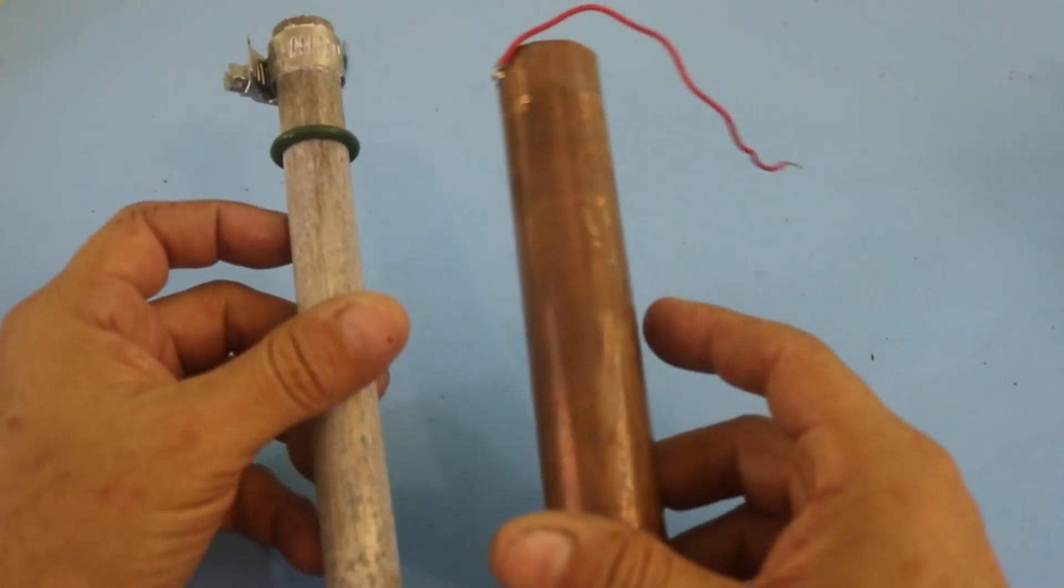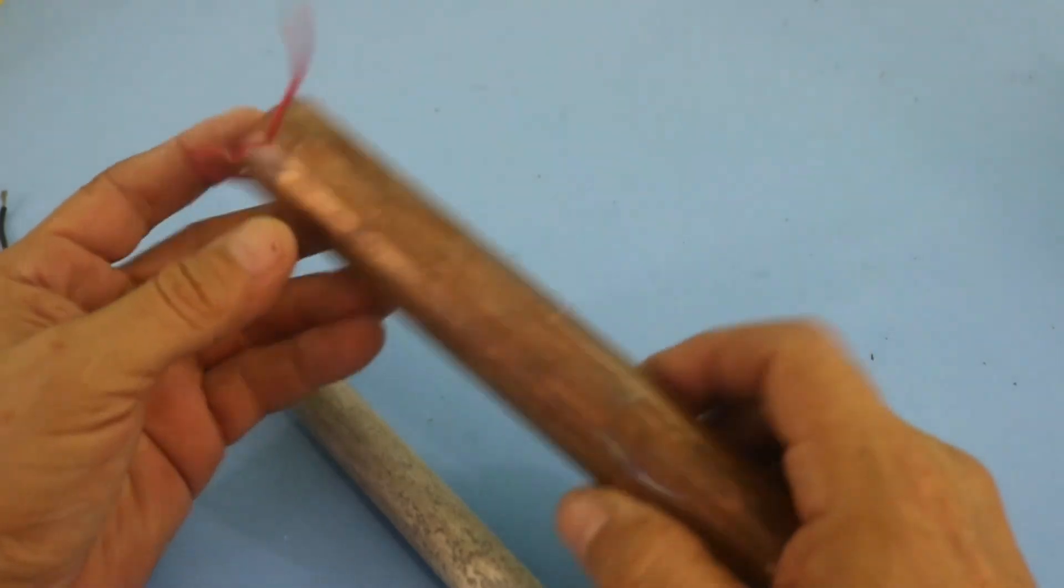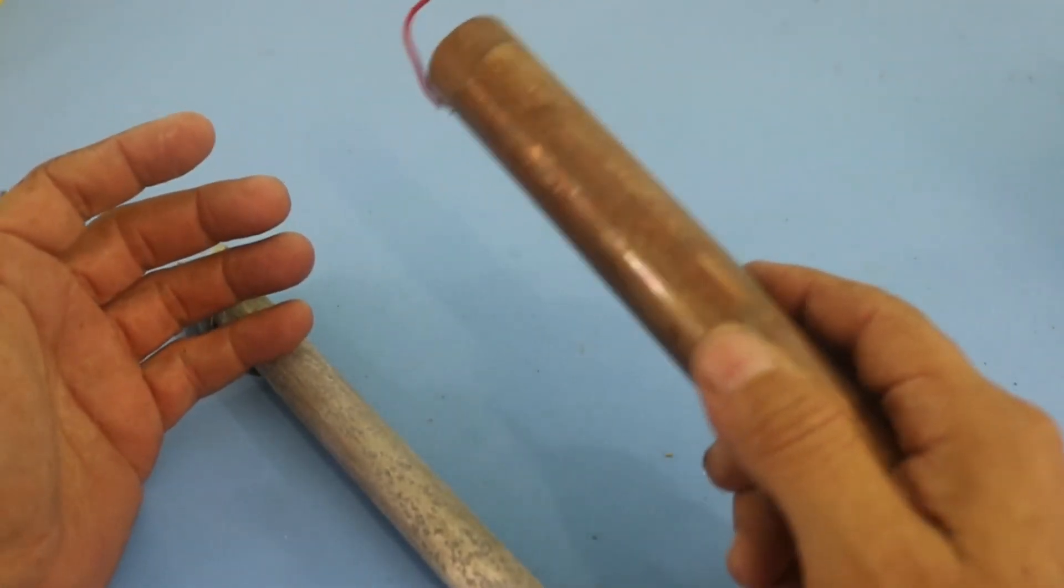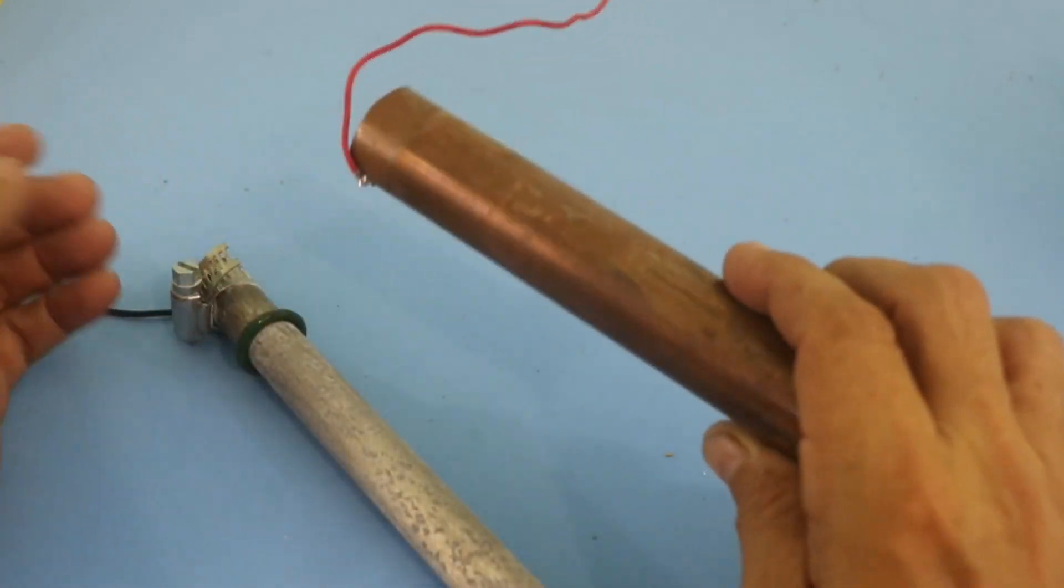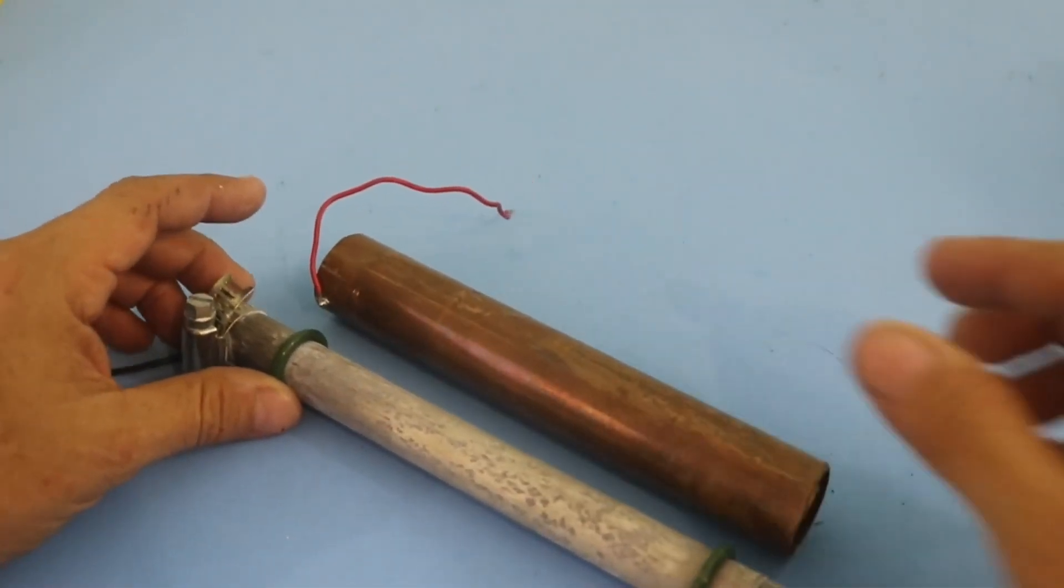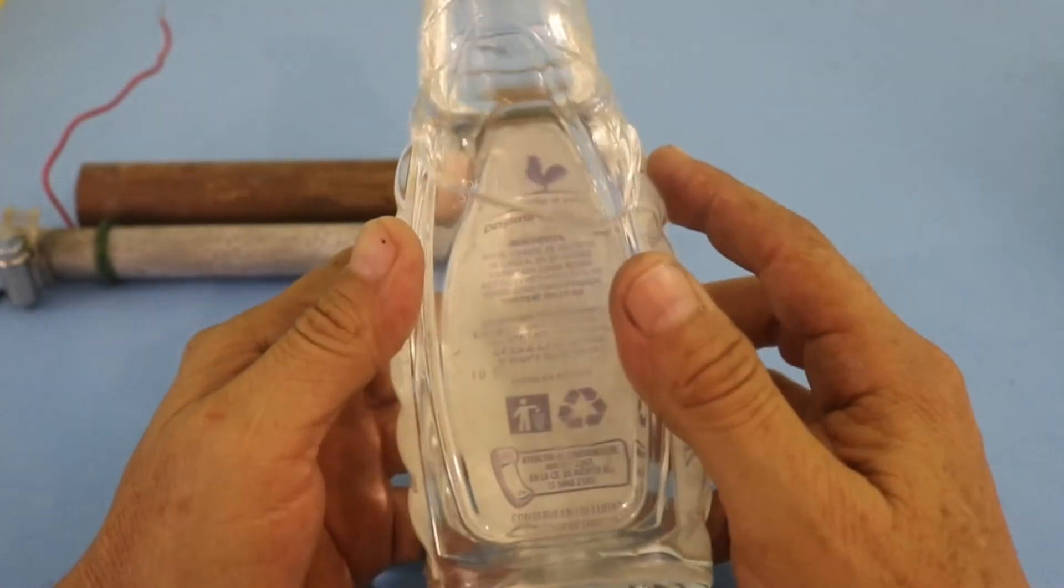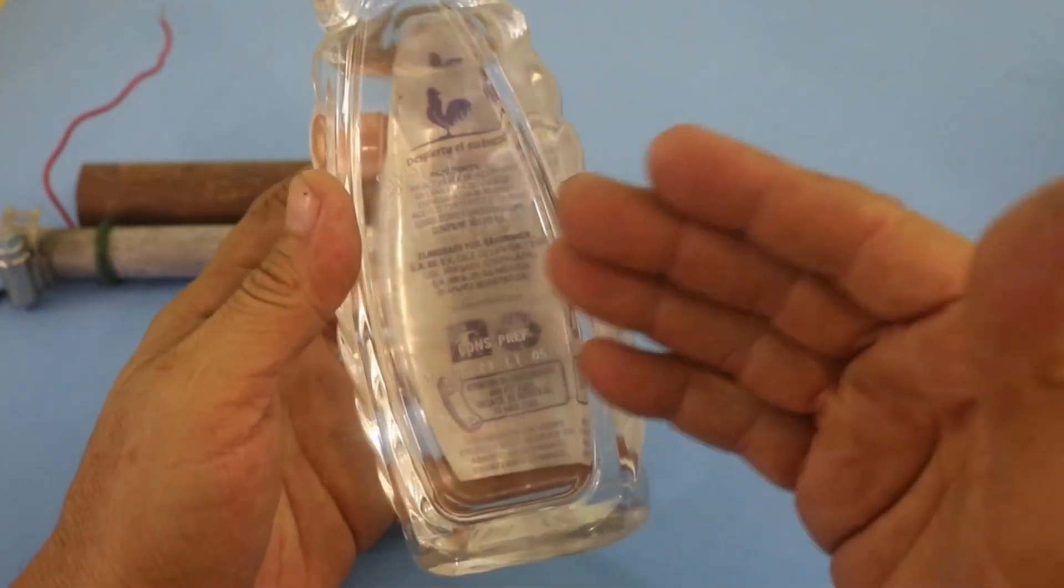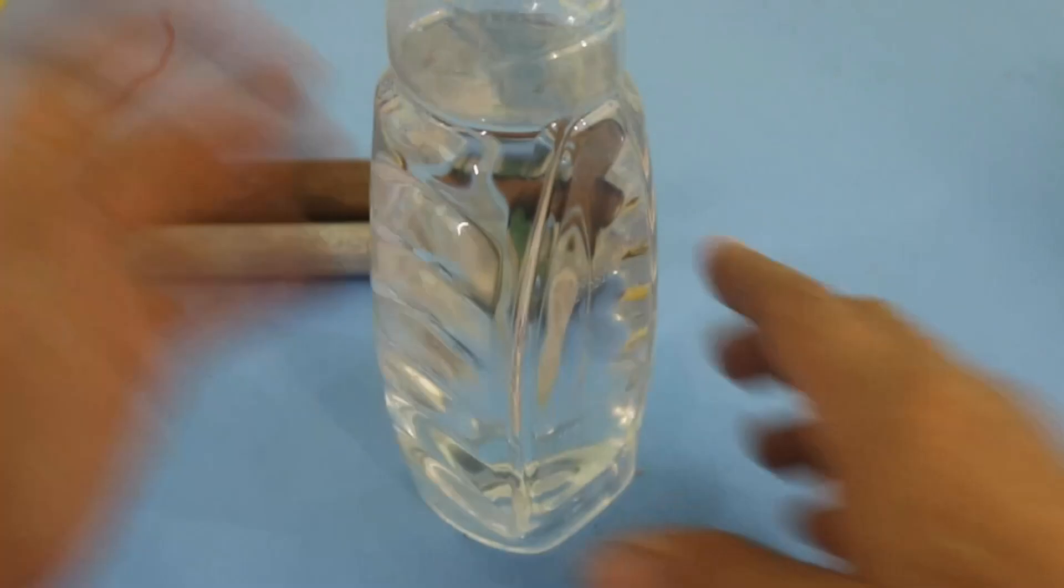We need also of course an electrolyte, and in that video I used salt water as an electrolyte. Now in this video I will use a different electrolyte to compare the two batteries. Instead of water I will use white vinegar and also I am adding some salt, and that will be the electrolyte.